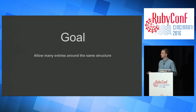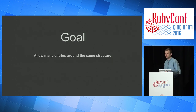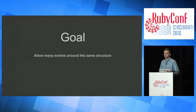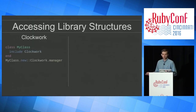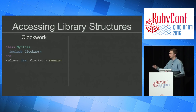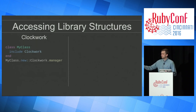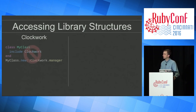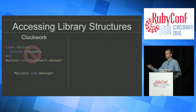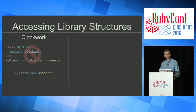Opening doorways — if we think of a library as a house, you would not put a door on the second story because the only way to access it is through a ladder. We want to allow many entries around the same structure of our library — build a big beautiful door and allow people to easily enter. Here's Clockwork — it executes applications at specific times. Here's a class that includes Clockwork, and here's a way you can access Clockwork's manager by scoping in. But what we want is to be able to access manager directly off the instance, without going through this roundabout way of accessing something users commonly want.